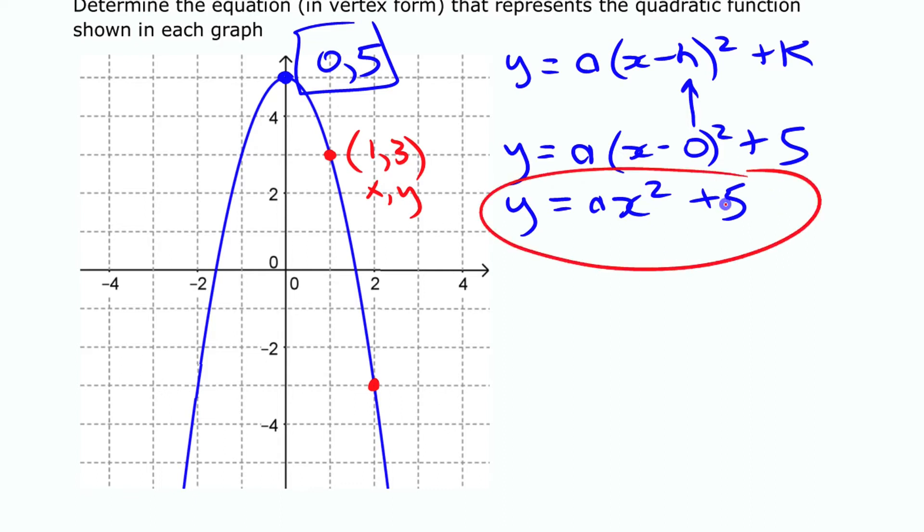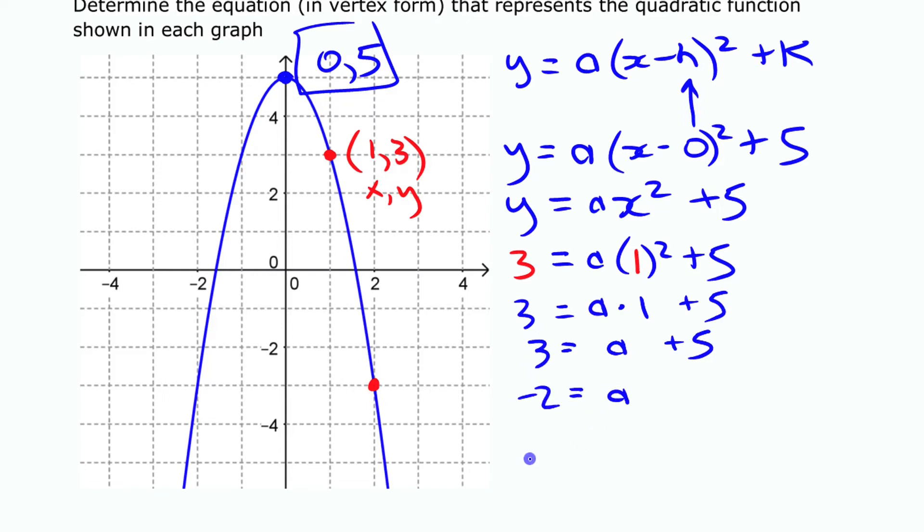If you know that those are the coordinates, you can substitute them in. You have an equation as long as you can substitute in values and just leave one variable you can solve for it. So if I put in 1 for x and 3 for y and go through and solve this, I'll have my a value there. There's not a lot that I have to do here. a times 1 squared is just a plus 5 equals 3, so a actually ends up being minus 2. So if I'm going to write my function there, minus 2 for a, x squared plus 5. That's the equation of my function.